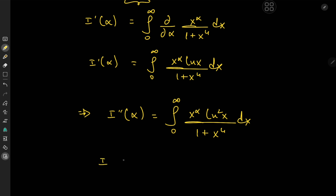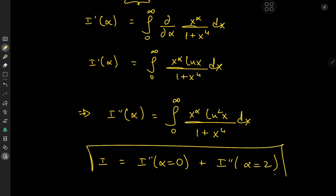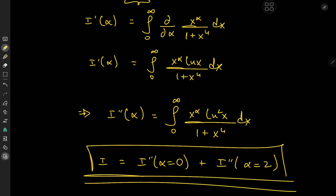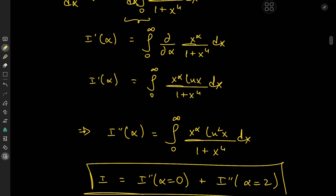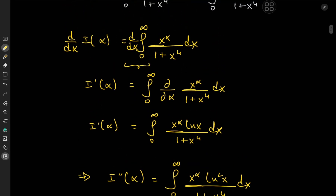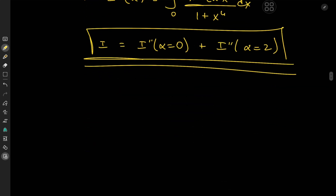That means our target integral equals I''(0) plus I''(2). So our plan is to differentiate the integral function twice and plug in those values of α. That plan works because we have a closed form for I(α), using a result derived previously — link in the description box.